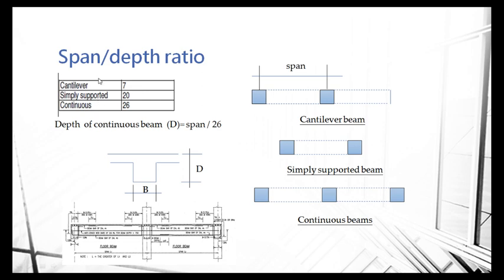For this simple formula, you can estimate the depth of the continuous beam. For example, span divided by 26 for continuous, simply supported is 20, and cantilever is 7. But you need to understand this is just an estimation of the depth of the beam. After you calculate the result, you need to allow some contingencies. That means, for example, if you calculate 300, normally you say 500 is the estimated size, because this is a rough estimation and not an exact figure.